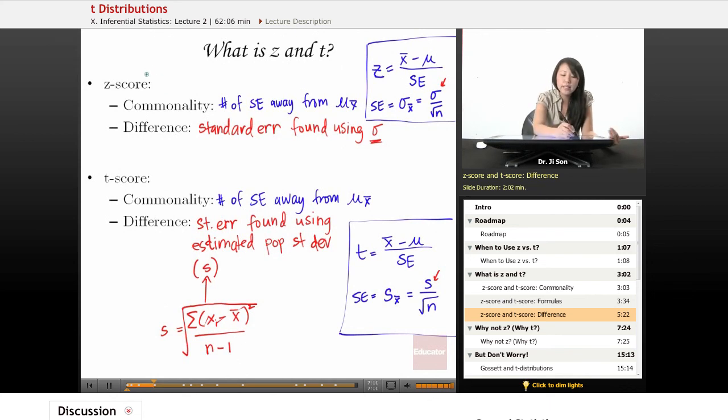So one thing you should know is that the z-score is less variable, and the t-score is going to be more variable. And that's going to come into bear on why we use which one.